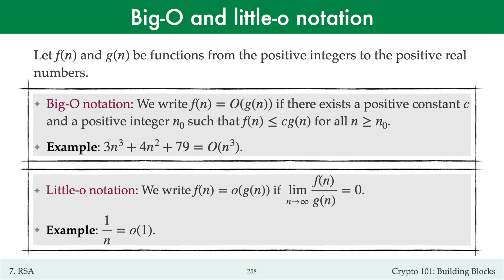I'll say that f of n is little o of g of n if the limit as n goes to infinity of f of n over g of n equals 0. In other words, the function values f of n are dominated by the function values g of n for all sufficiently large n. For example, 1 over n is little o of 1.